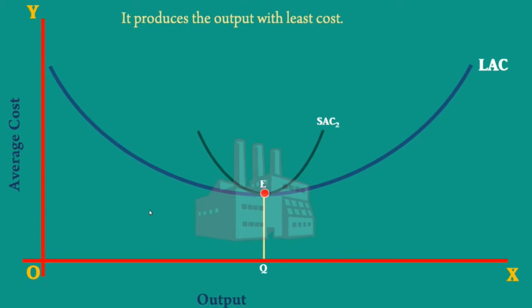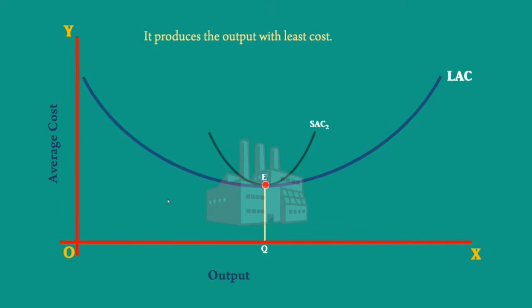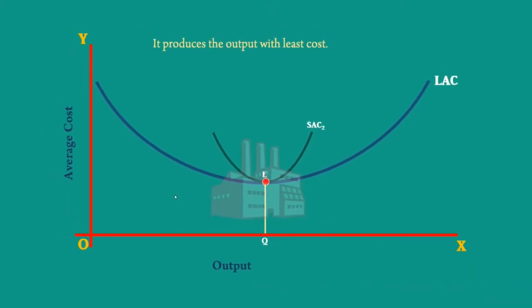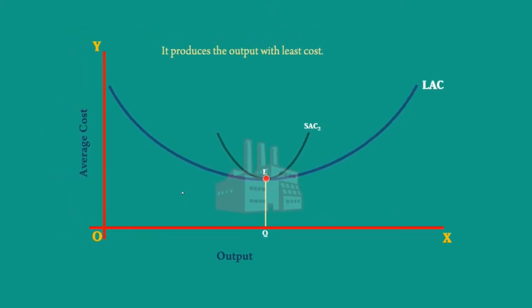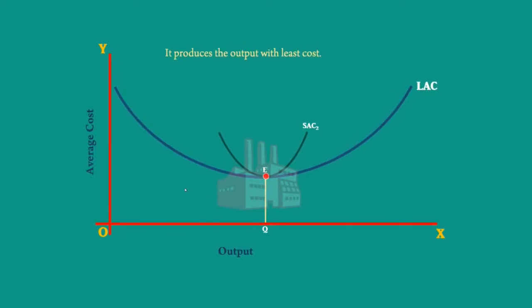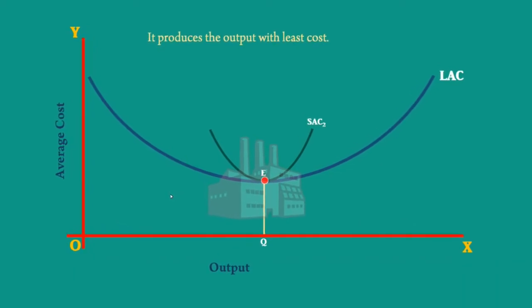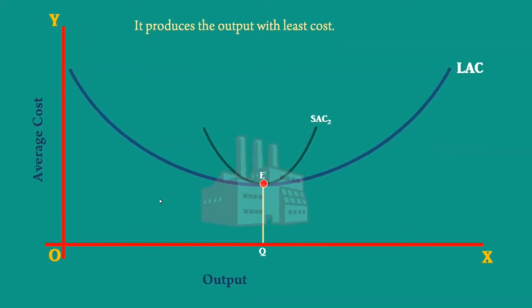It achieves this with the existing production technology and organizing ability. It uses the internal economies of scale to the full extent. If it exceeds this output, internal diseconomies of scale will start showing up.